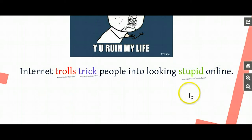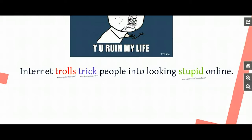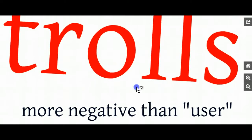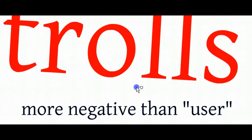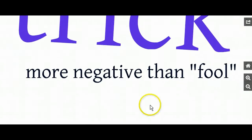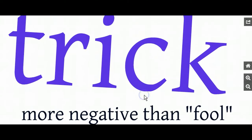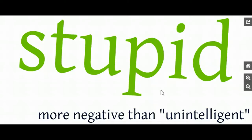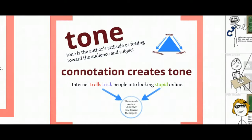What's the overall feeling of these two sentences? Do you see a difference? 'Trolls' is more negative than 'users.' 'Trick' has a more negative connotation than 'fool.' And 'stupid' certainly has a more negative connotation than 'unintelligent.' When that happens, the entire sentences themselves change their feeling and meaning. So the connotation of words really matters.